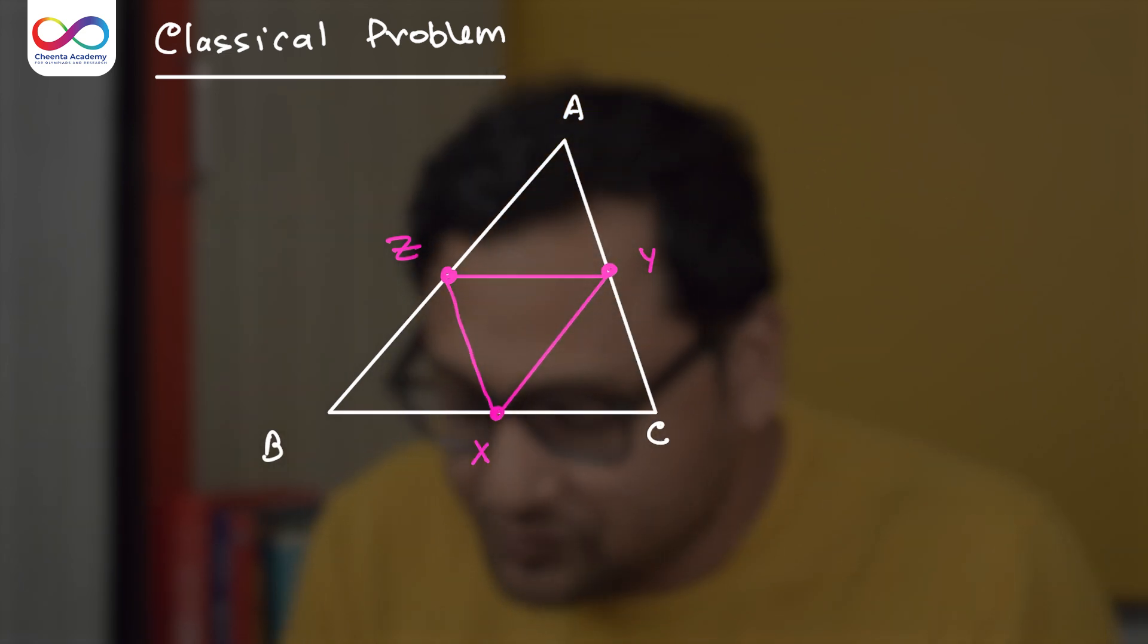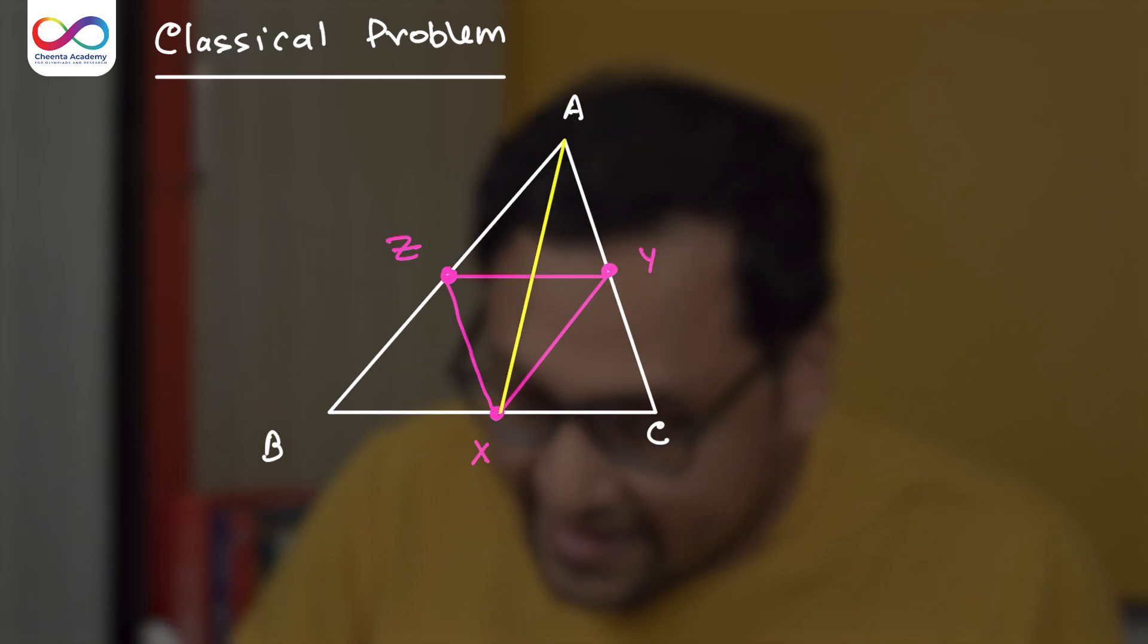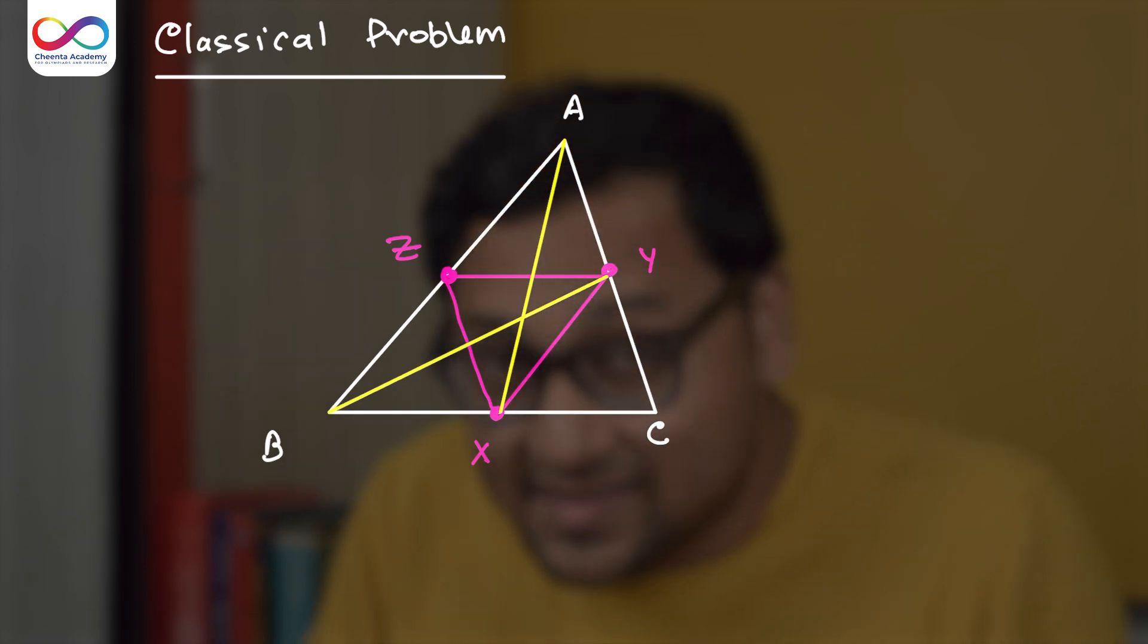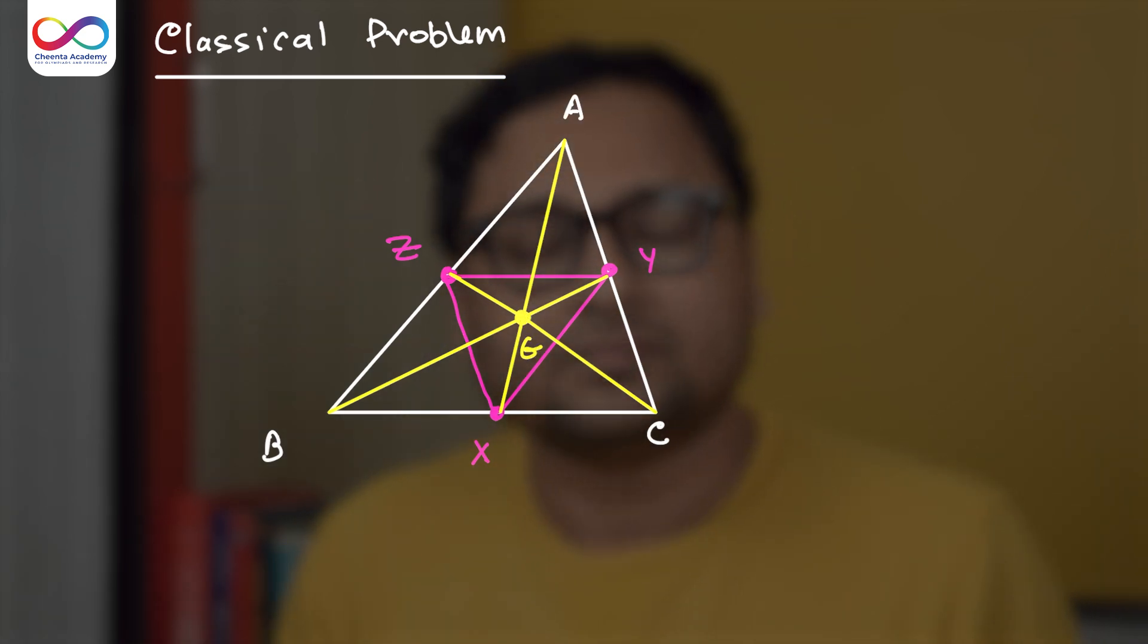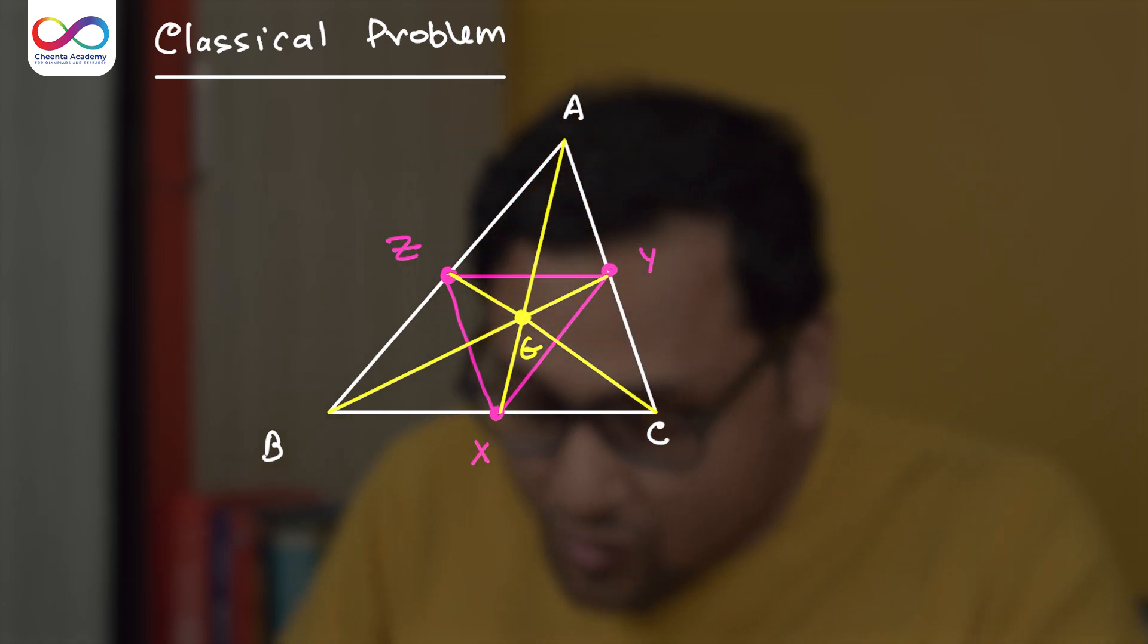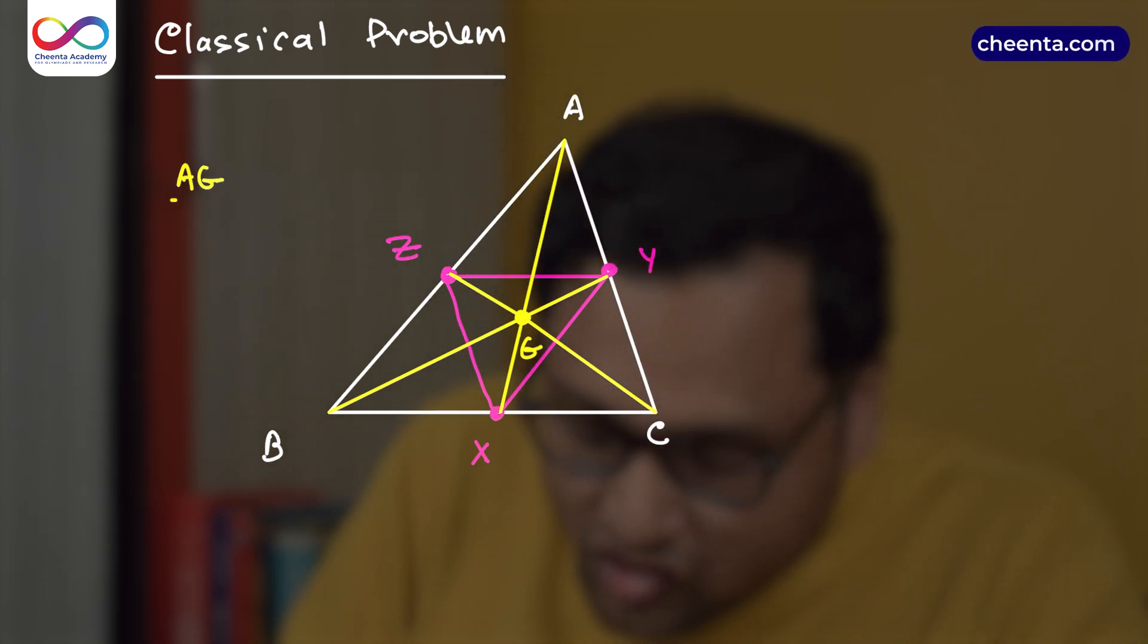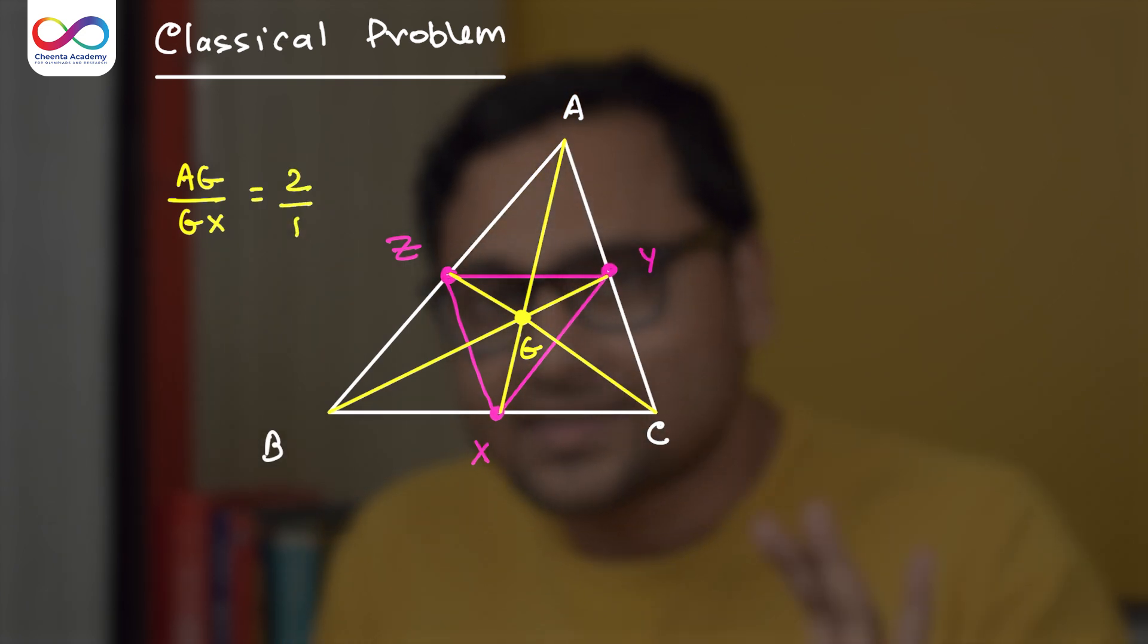And what you do is you join the points A and X, B and Y. These are clearly the medians. And we all know that medians of a triangle pass through a same point. And that point is known as the centroid, G. We also know another thing. We know that AG over GX is equals to 2 is to 1.